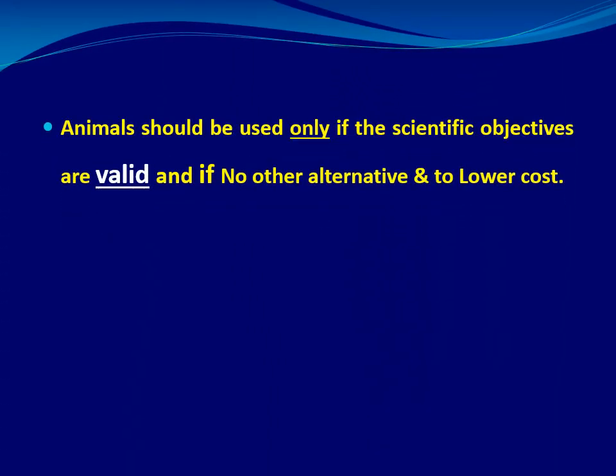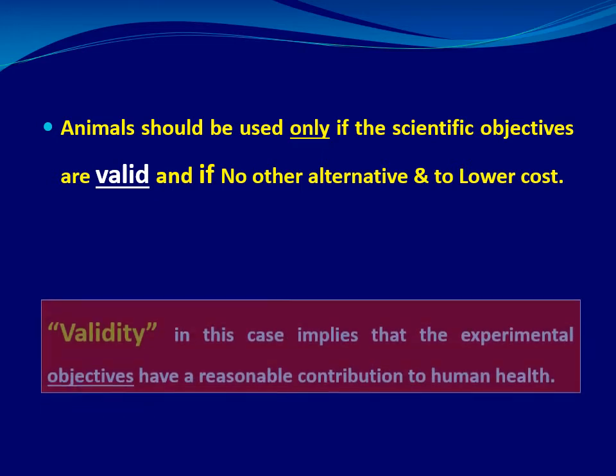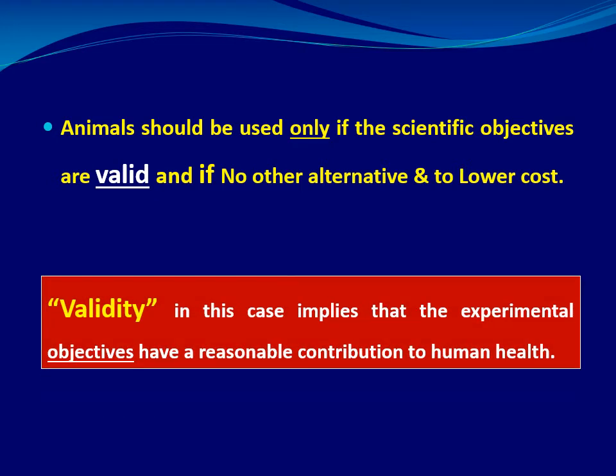Animals should be used only if the scientific objectives are valid — meaning the experimental objectives have reasonable contribution to human health, either by improving understanding of pathophysiology or improving management of diseases, and if there are no other alternatives or if using animals reduces costs.